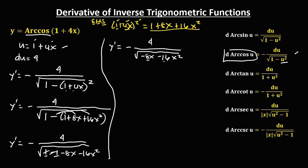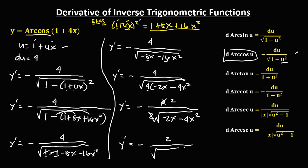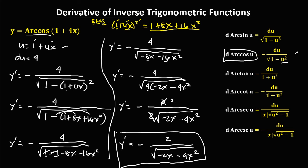Since we can factor out positive 4 from 8 and 16, we have y prime equals negative 4 over the square root of 4 times (negative 2x minus 4x squared). The square root of 4 is 2, so this simplifies to y prime equals negative 2 over the square root of negative 2x minus 4x squared. This is the derivative of arccos(1 plus 4x).